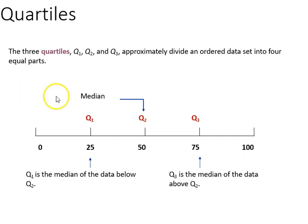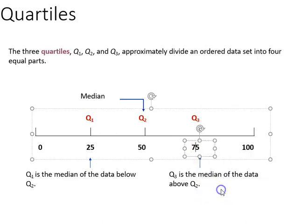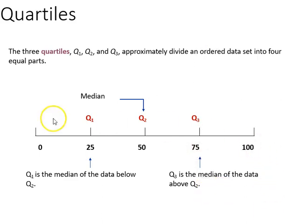We indicate the quartiles with these notations q1, q2, and q3, and q1 corresponds to 25% of the distribution, q2 to one half, and q3 to three fourths, or 75%. Then, of course, 100% would be q4 if we wanted to include that.